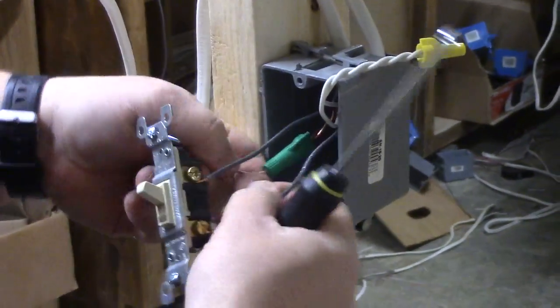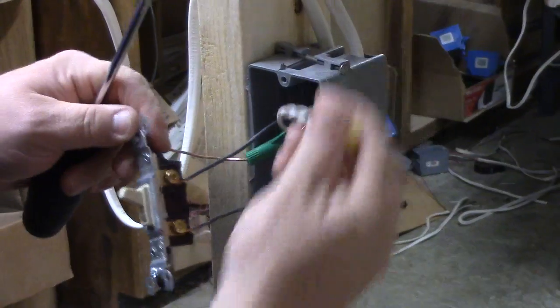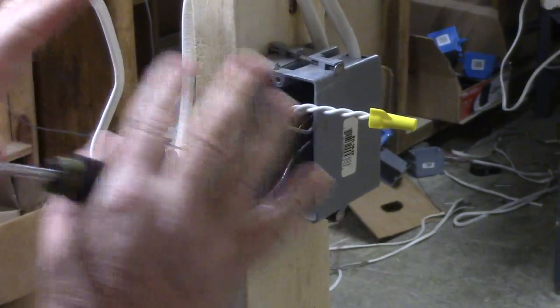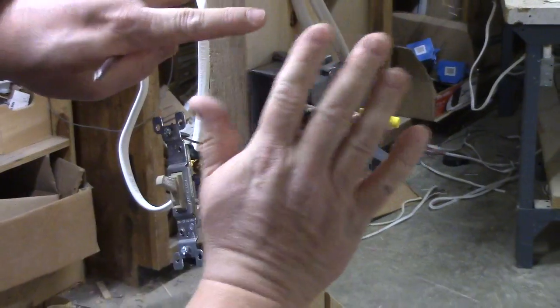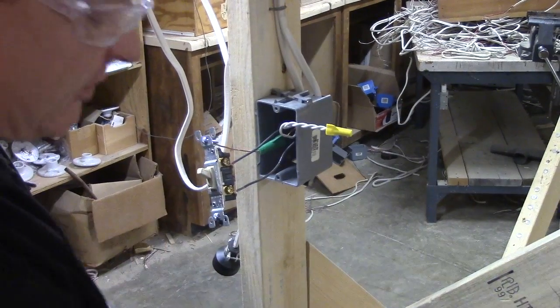We have both our hot wires or black wires hooked up. Our neutrals are taken care of. We are pretty much done here, besides just putting it all back in the box and putting our cover on and moving on. Let's move on to our light.